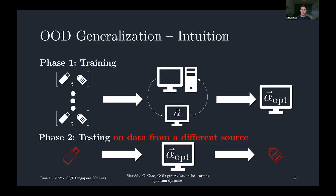As an analogy: in-distribution generalization is like school, where your teacher gives you exercises and in the exam you solve exercises also created by the teacher. Out-of-distribution generalization is more like the transition from study to research — you study until you get your degree with many exercises, but research is a bit different, though it still has something to do with your studies.